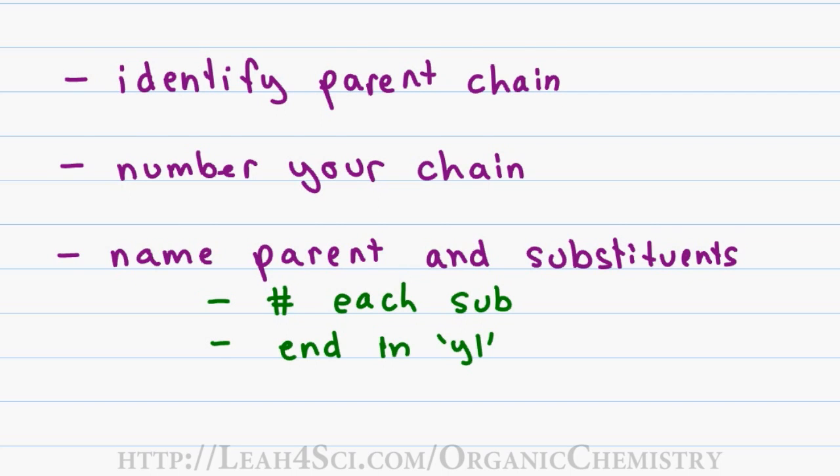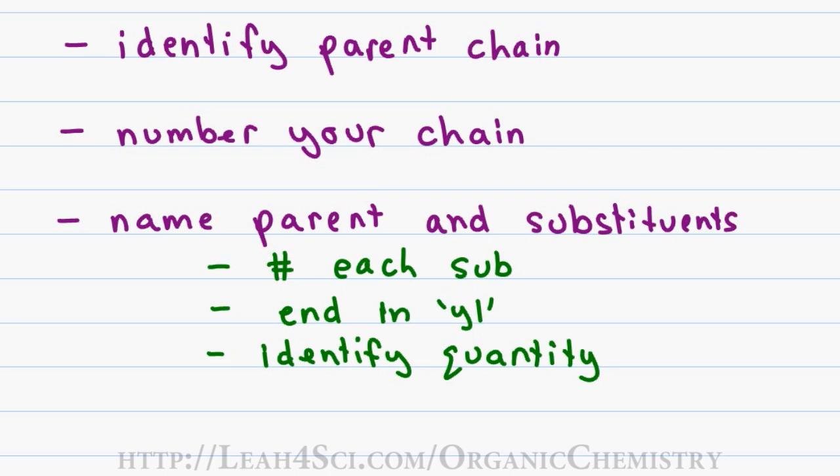And last but not least, tell how many of each substituent you have. If you have a single substituent, you don't need a number because it is understood to be 1. If you have more than 1, include the prefix di for 2, tri 3, tetra 4 and penta 5.